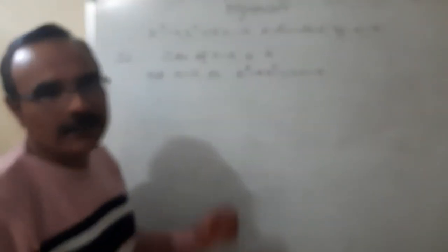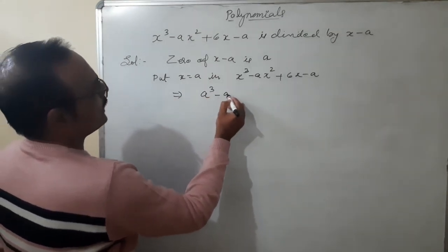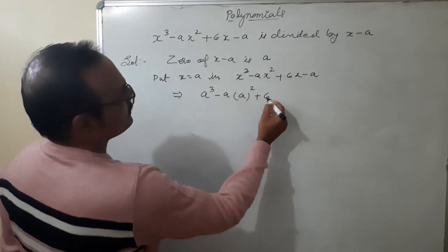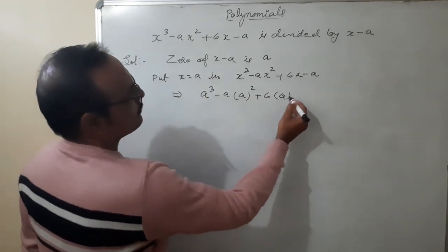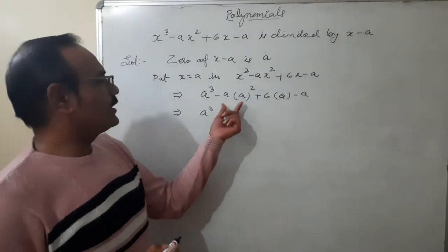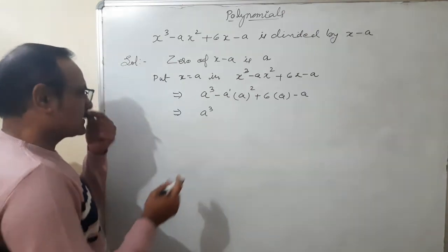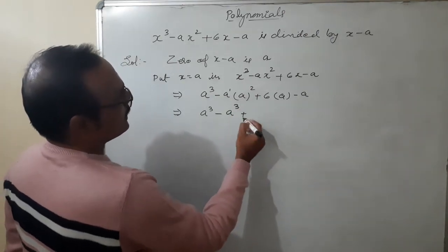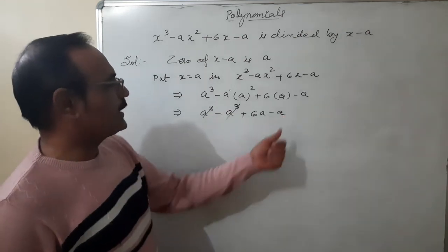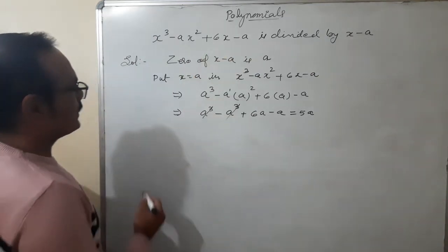Substituting x equal to a: a³ minus a times a² plus 6a minus a. Using the law of exponents, a times a² gives a³. So we have a³ minus a³ plus 6a minus a. The a³ terms cancel, giving 6a minus a, which is 5a.